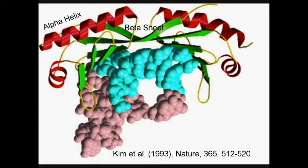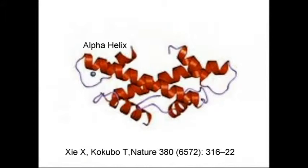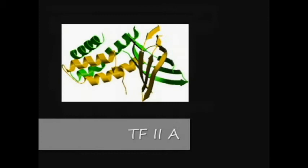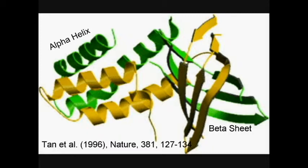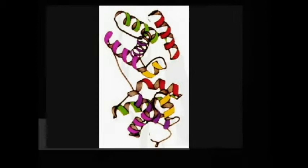TF2D binds to the TATA box of the promoter region. Binding of this factor marks the initiation of the transcription process. TATA binding protein associated factor helps TF2D in recognizing the core promoter region. TF2A binds upstream of TF2D and stabilizes the binding of TATA binding protein and TATA binding protein associated factor.